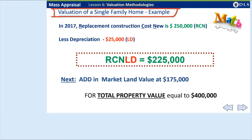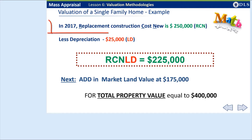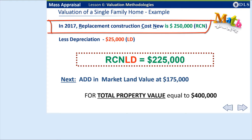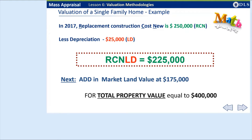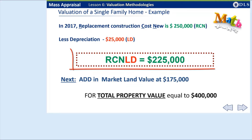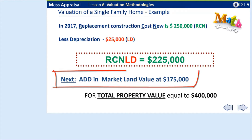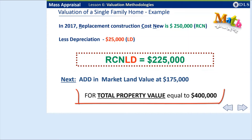Here's an example of the basic math to calculate a single-family home. A single-family home built in 2007 would cost $250,000 to rebuild new today. The depreciation due to being 10 years old is determined to be $25,000, which is subtracted from the replacement cost new. The market land value for this parcel is determined to be $175,000. The total property value will equal $400,000.